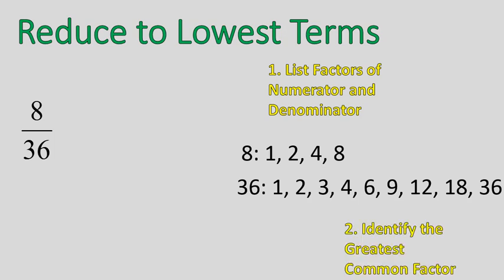Now I need to identify the greatest common factor. Can you do that? What is the greatest, largest factor that is both a factor of 8 and 36? See, that number is 4. So I'm going to now go to the next step, which is to divide both the top and bottom of my fraction by 4, by that greatest common factor. And that gives me a fraction, a new fraction of 2 over 9. This is my fraction in lowest terms. I have now reduced my fraction to lowest terms. So those are the steps right there.